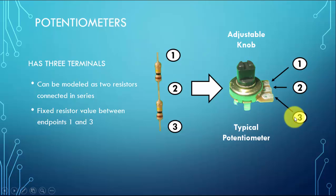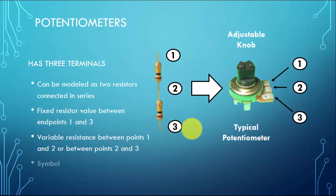In order to have variable resistance, you need to use points 1 and 2, or between points 2 and 3, and that will give you a variable resistance. The symbol for potentiometer is simply a resistor with an arrow pointing at it or going through it. So if you just see a resistor with an arrow, it is a potentiometer.